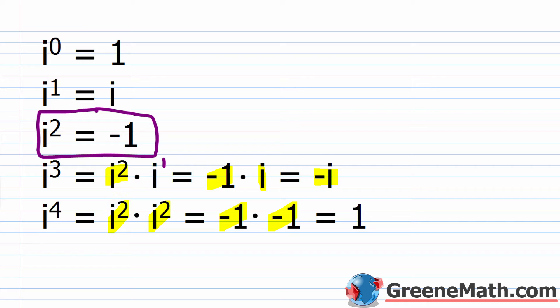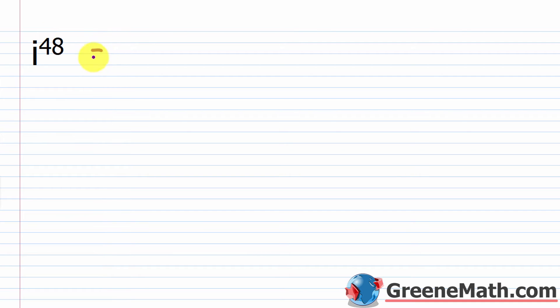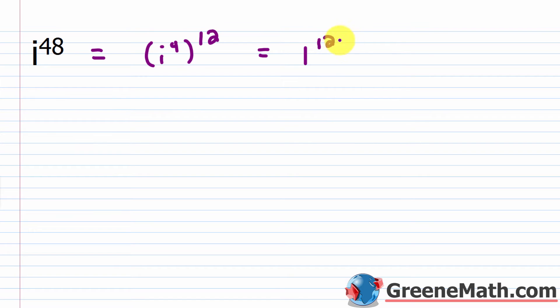Let's look at our first example: i to the power of 48. When dealing with whole number exponents, the first thing you want to do is check for divisibility by four — if it's divisible by four, it equals one. 48 is divisible by four: 48 divided by 4 is 12. So we rewrite this using the power-to-power rule as i to the fourth power raised to the 12th power. Since i to the fourth power is one, this is one to the 12th power, which is one.